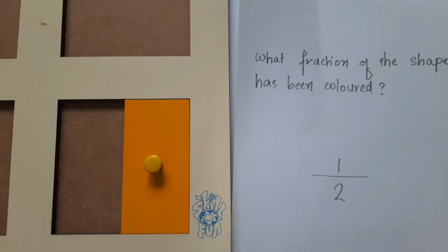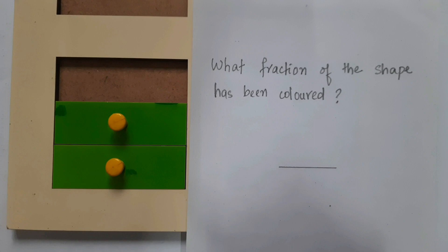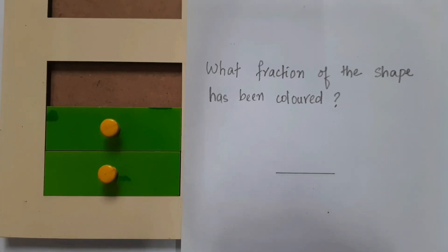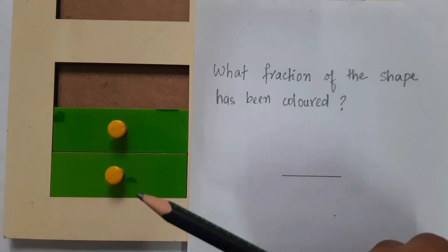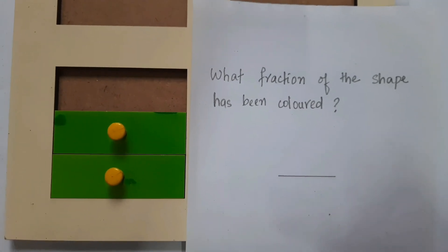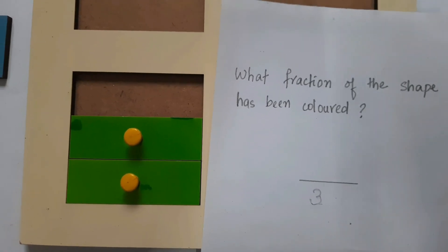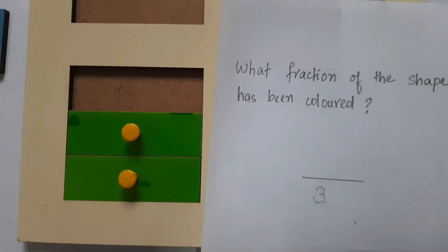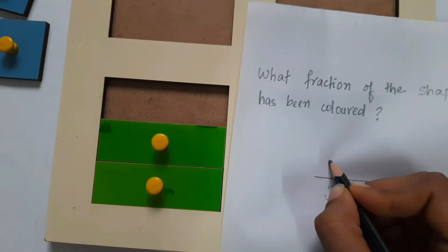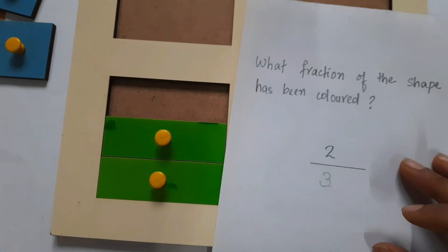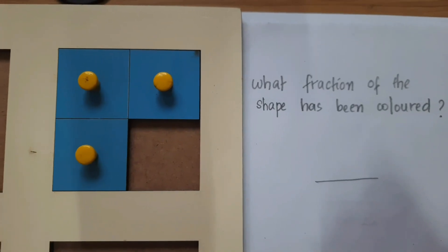Now let's look at this question. First, ask the child to mark how many parts in total. Let the child count: 1, 2, 3. So the denominator is 3. Now ask the child how many parts are colored: 1, 2. So the answer is 2. The fraction is 2 by 3.